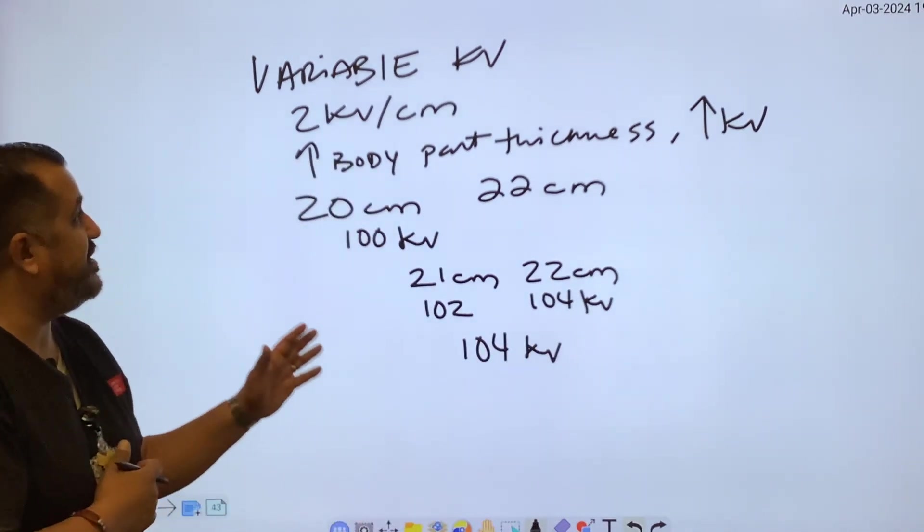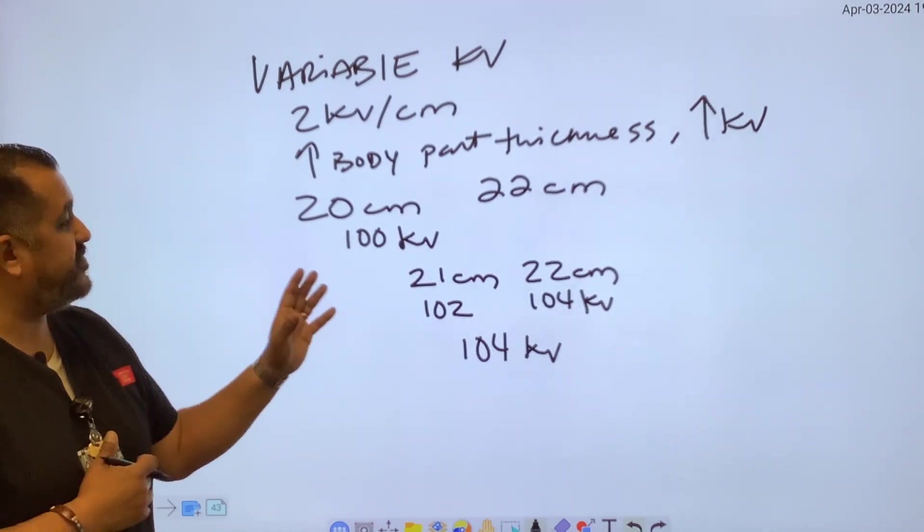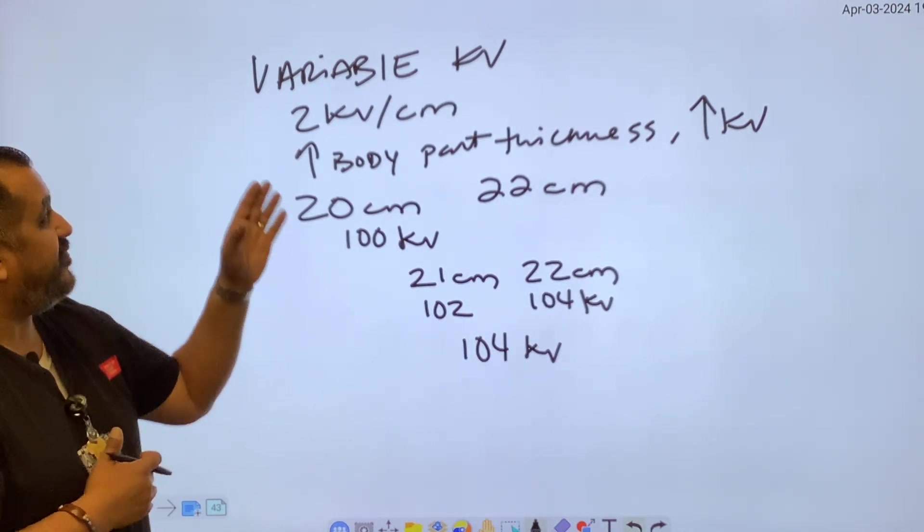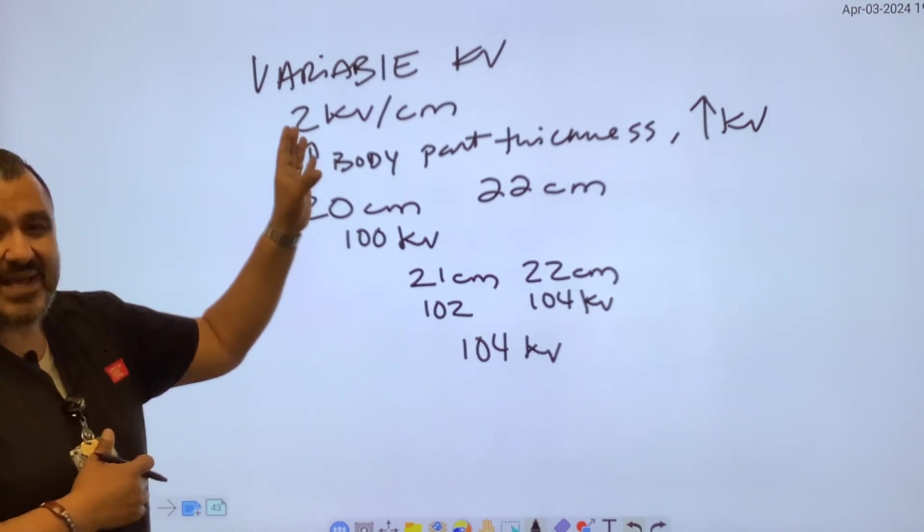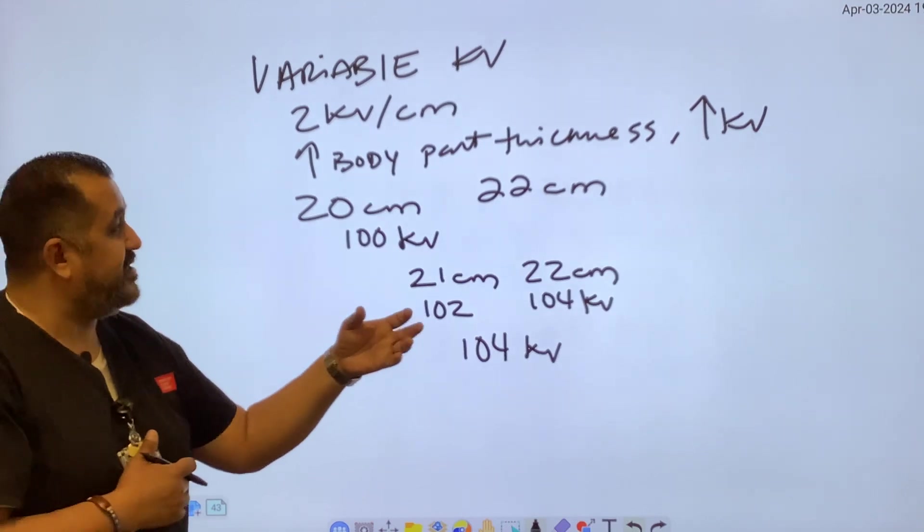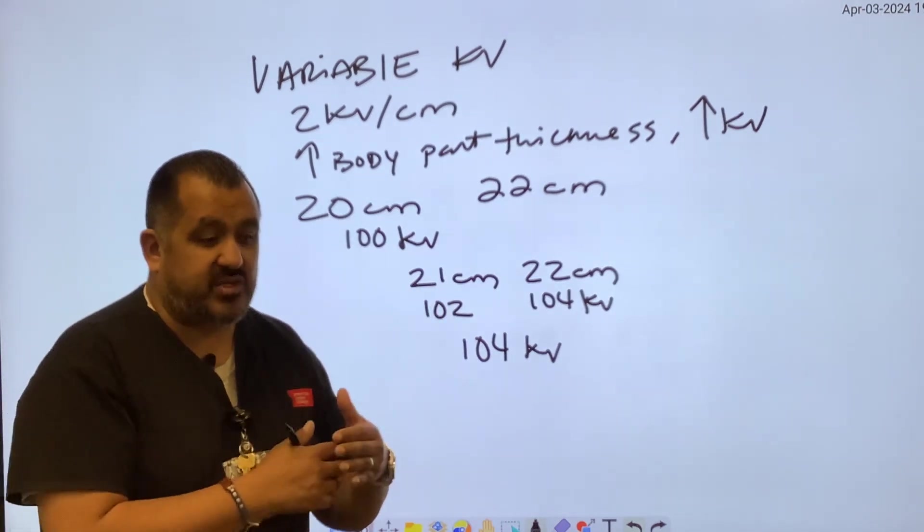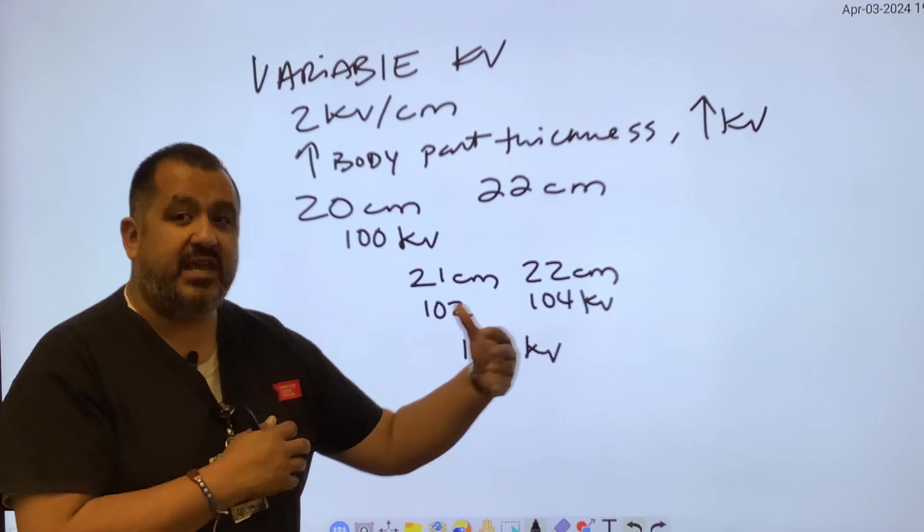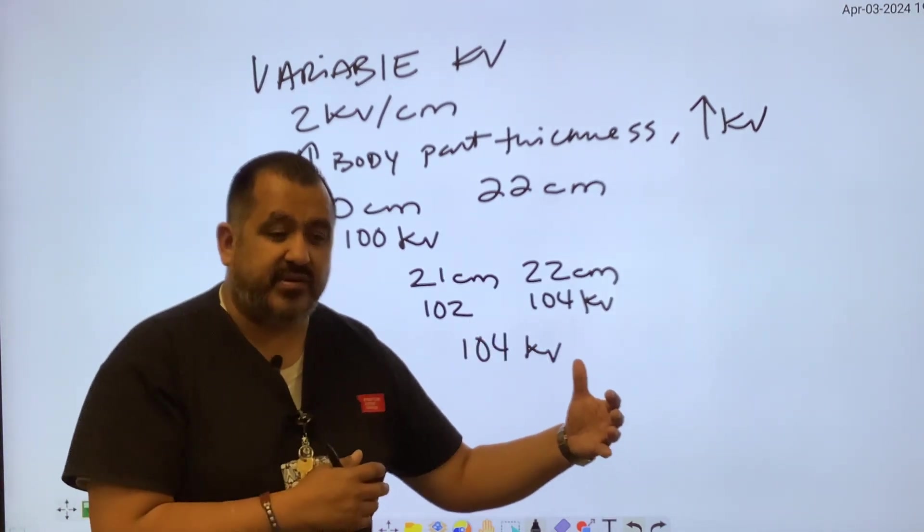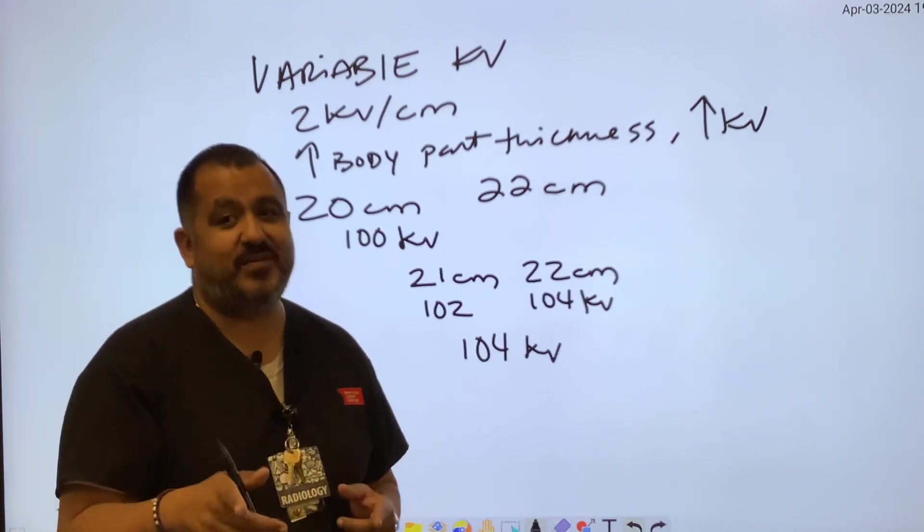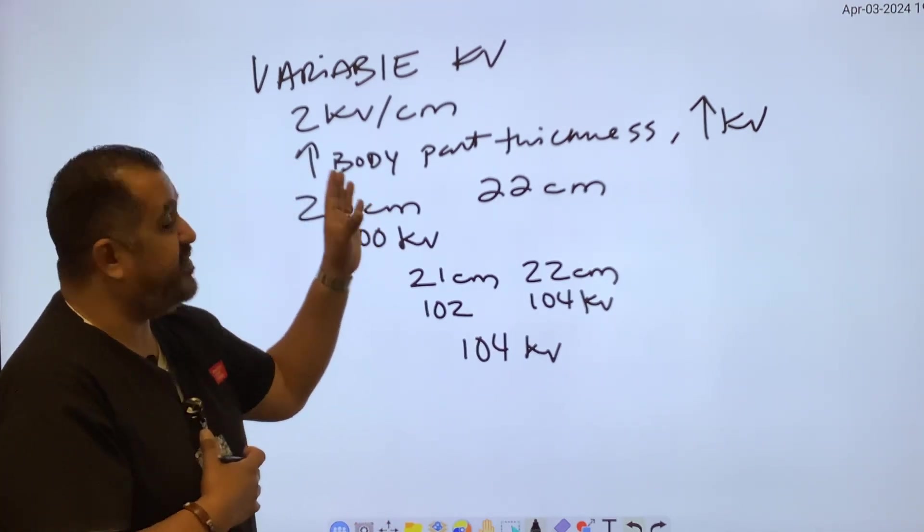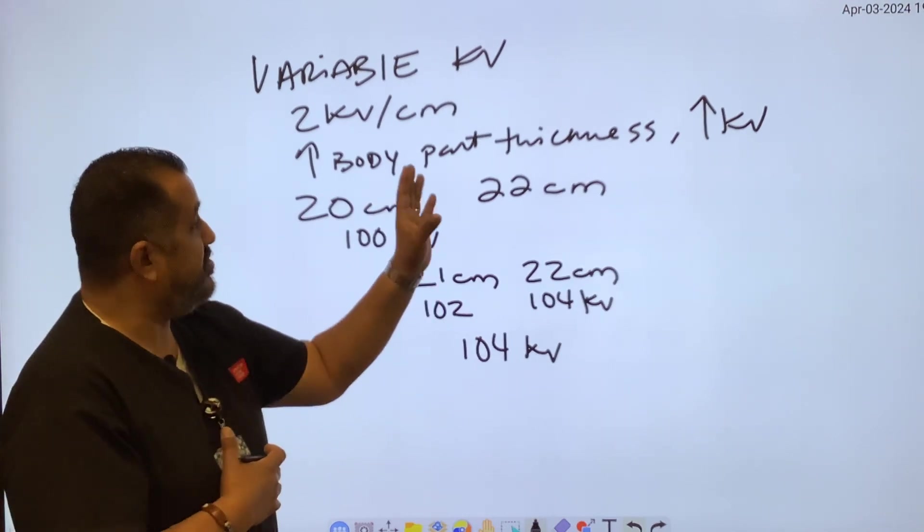So this is variable KV technique charts. This one's very easy to use - it's two KV per body part thickness. Variable KVP means the mAs stays the same, you're just changing the KVP. This works really great when you want to make small incremental changes to your KV. Now, when you change the KVP, you can also change the scale of contrast, but we'll do a separate video for that.